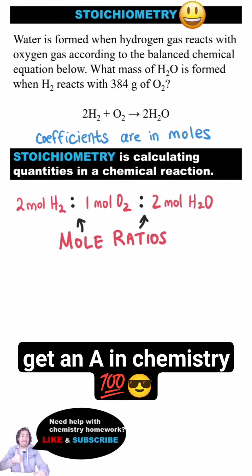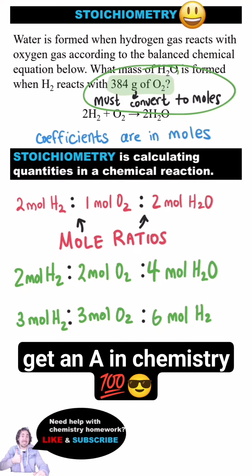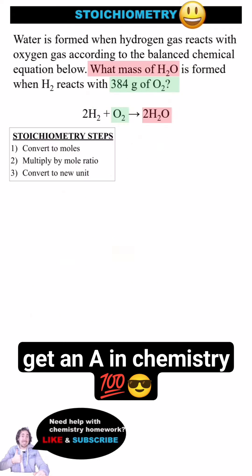These are mole ratios, which allow chemical equations to work like recipes. If I want to produce 4 moles of water, just double the recipe. And 6 moles, just triple it. I just need to make sure I'm using units of moles, so if the given quantity is in a different unit, I need to convert it first.